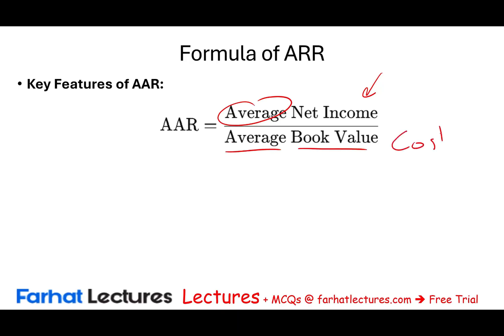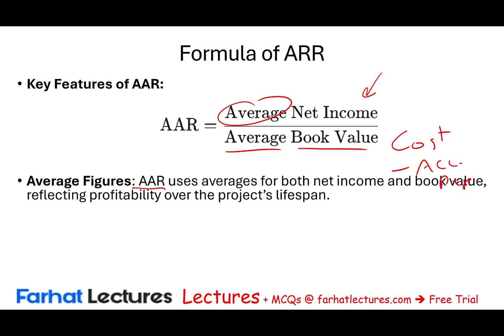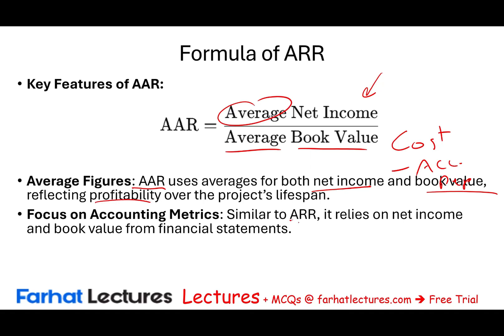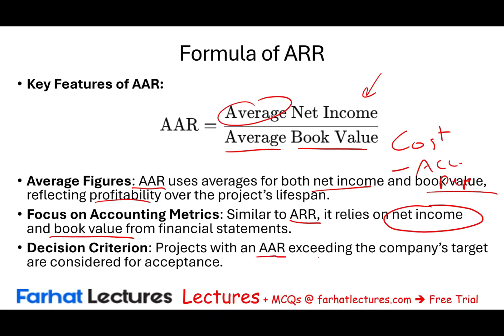The book value is the cost minus any accumulated depreciation of the asset. AAR uses averages for both net income and book value, reflecting profitability over the project's lifespan. Similar to ARR, it relies on net income and book value — both accounting figures, and that's their weakness. Why? Because accounting is accrual, meaning you are using estimates, allowances, and reserves, and managers can manipulate those figures easily. A project with an AAR exceeding the company's target rate will be accepted.